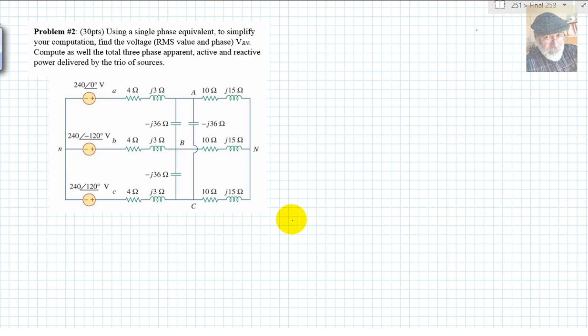As usual, let's begin by reading the question. Using a single-phase equivalent to simplify your computation, find the voltage RMS value and phase VBN.